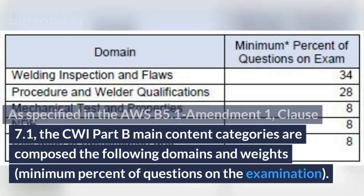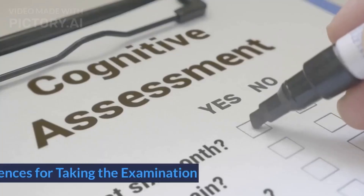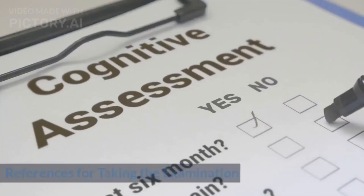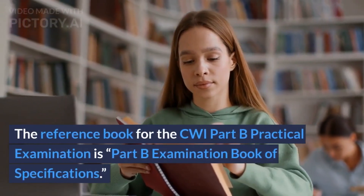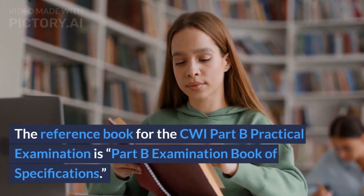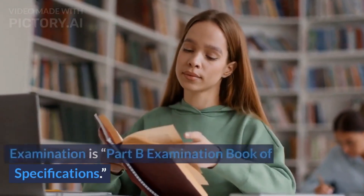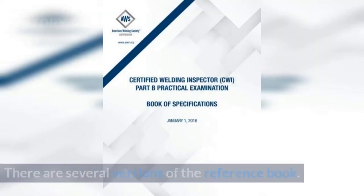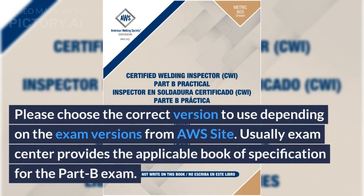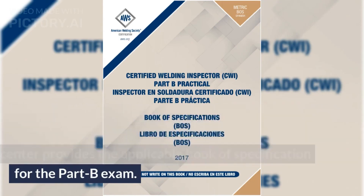Minimum percent of questions on the examination and references for taking the examination are provided. The reference book for the CWI Part B Practical Examination is the Part B Examination Book of Specifications. There are several versions of the reference book; please choose the correct version depending on the exam version from the AWS site. Usually the exam center provides the applicable book of specifications for the Part B exam.